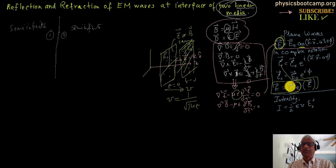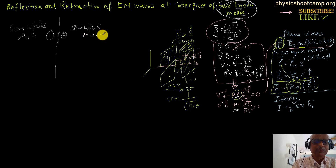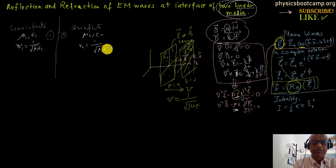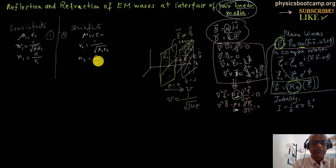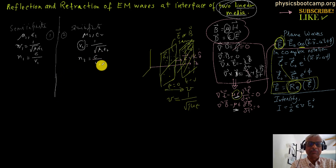Back to the reflection problem: medium 1 has parameters μ₁, ε₁ and medium 2 has μ₂, ε₂. The wave speeds are v₁ = 1/√(μ₁ε₁) and v₂ = 1/√(μ₂ε₂). The refractive index is n = c/v, so n₁ = c/v₁ and n₂ = c/v₂. We take a plane interface between the two.